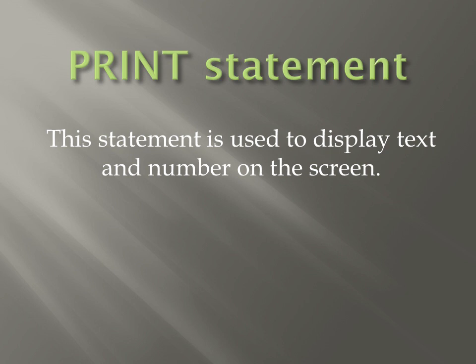Basically یہ message کو screen پہ show کروانے کے لیے use ہوتا ہے۔ Syntax یہ ہوگا: PRINT اور bracket میں list of expressions، semicolon کے ساتھ end کریں گے۔ Expression in the list may be numeric or string expressions, separated by comma, space، اور semicolon۔ Comma کے ساتھ الگ ہوگا، پھر اس کے درمیان space آئے گی اور آگے semicolon لگایا جائے گا۔ If we omit the list of expressions, a blank line is printed.